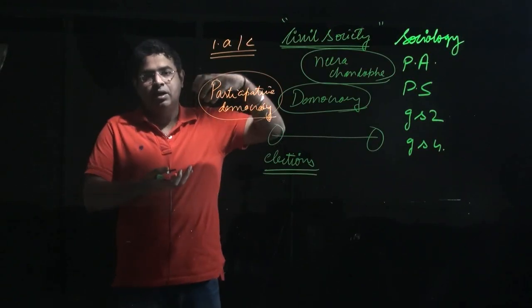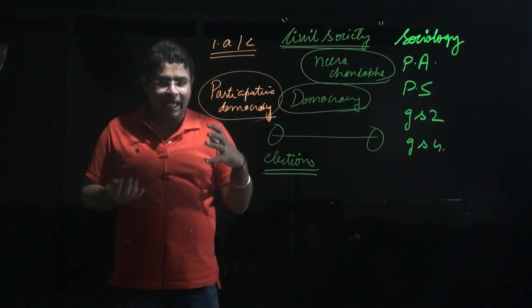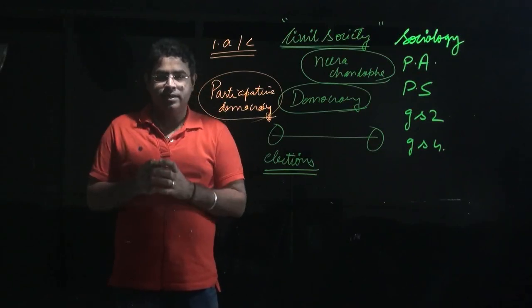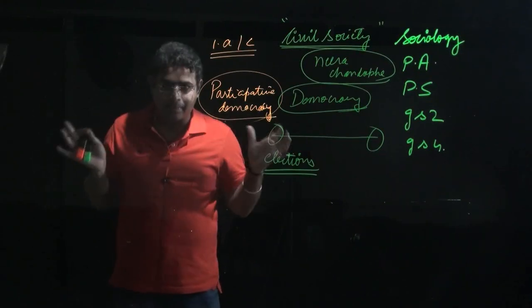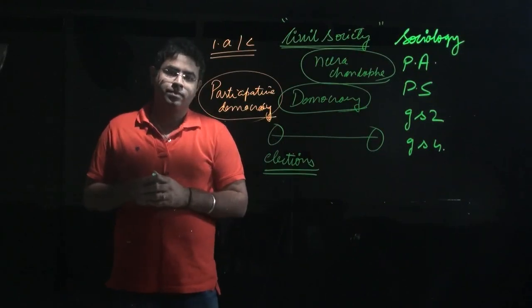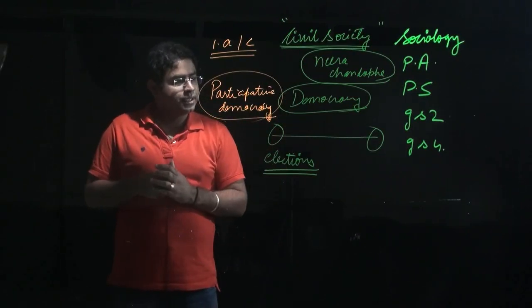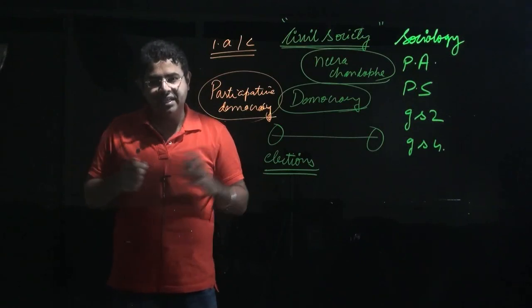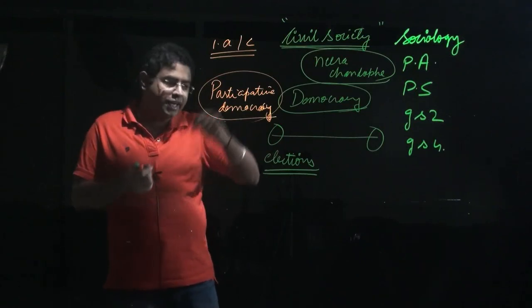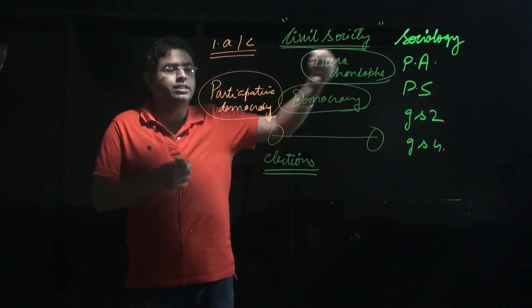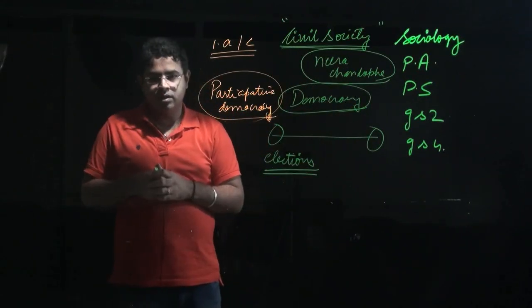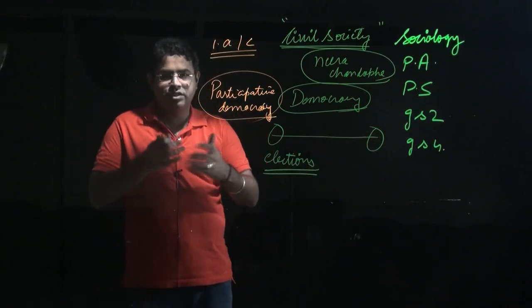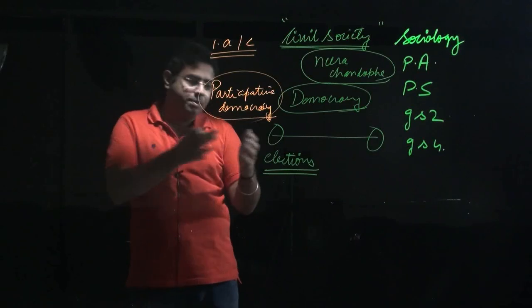Democracy accords a prime role to the people — a role that is very pristine and sacramental. However, democracy is not a uniform system; there are different variants. Democracy has its own spectrum, and we need to understand those subsets of democracy.